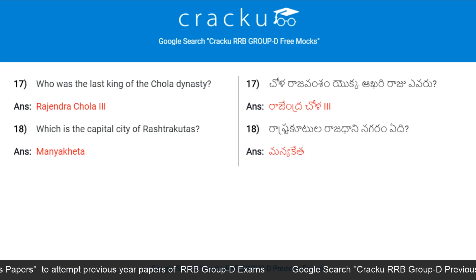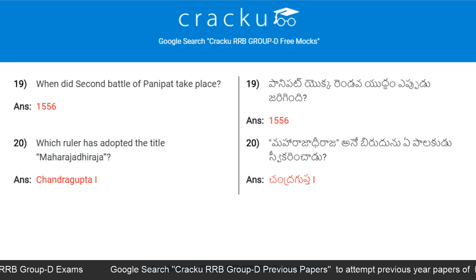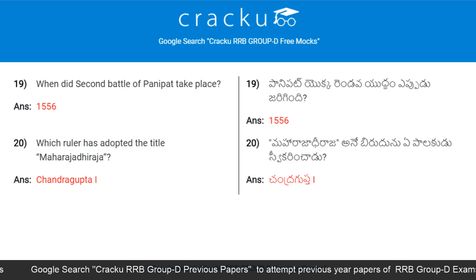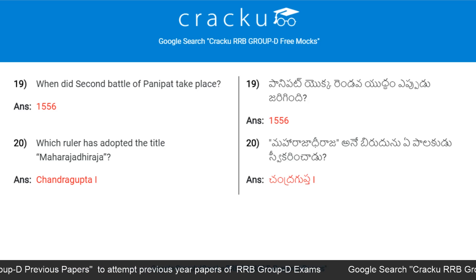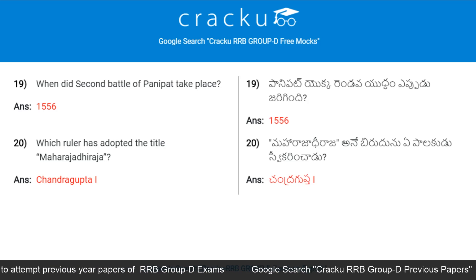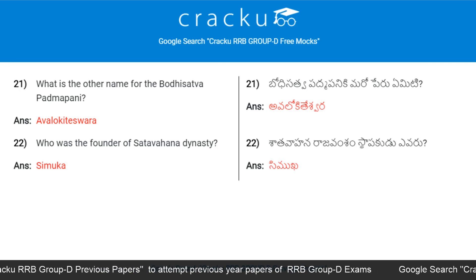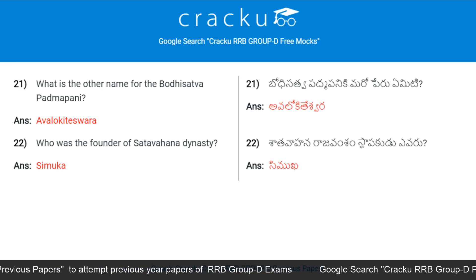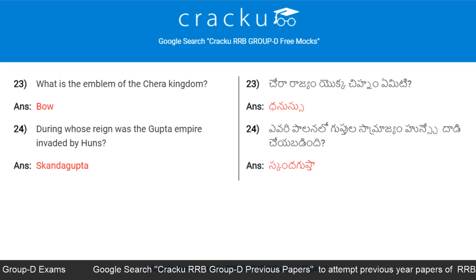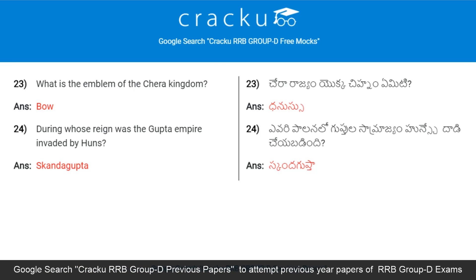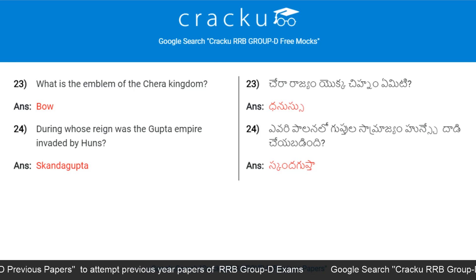Which is the capital city of the Rashtrakutas? Answer: Manyaketa. When did the Second Battle of Panipat take place? Answer: 1556. Which ruler adopted the title Maharajadhiraja? Answer: Chandragupta I. What is the other name for Bodhisattva Padmapani? Answer: Avalokiteshvara. Who was the founder of the Satavahana dynasty? Answer: Simuka. What is the emblem of the Chera kingdom? Answer: Bow. During whose reign was the Gupta Empire invaded by the Huns? Answer: Skanda Gupta.